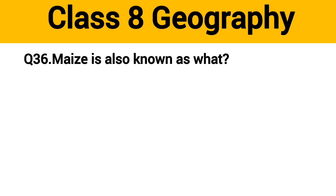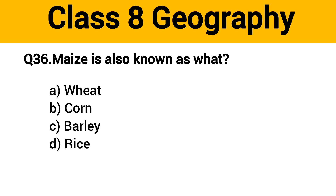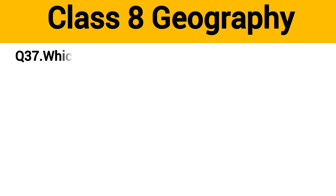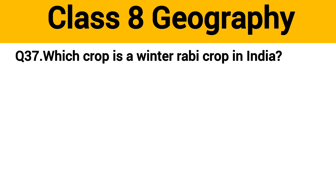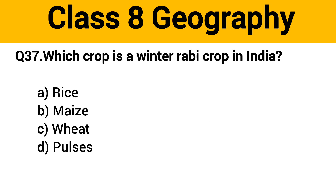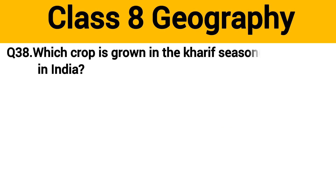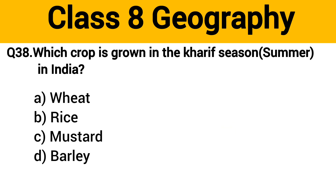Question number 36: Maize is also known as what? The right answer is option B: corn. Question number 37: Which crop is a winter rabi crop in India? The right answer is option C: wheat.